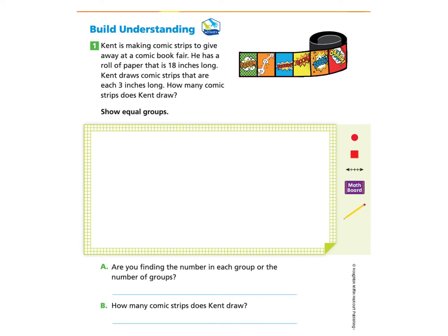Kent is making comic strips to give away at a comic book fair. He has a roll of paper that is 18 inches long. Kent draws comic strips that are each 3 inches long. How many comic strips does Kent draw? Show equal groups. I'm going to start by creating 18 little squares, and these 18 squares represent the roll of paper that is 18 inches long. If you would like to pause so that you can draw these squares, you can do that now.